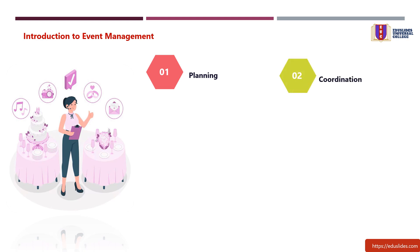2. Coordination: Coordinating various aspects of an event is vital for its success. This involves liaising with vendors, sponsors, and other stakeholders, as well as managing logistics such as venue selection, catering, transportation, and audiovisual requirements.